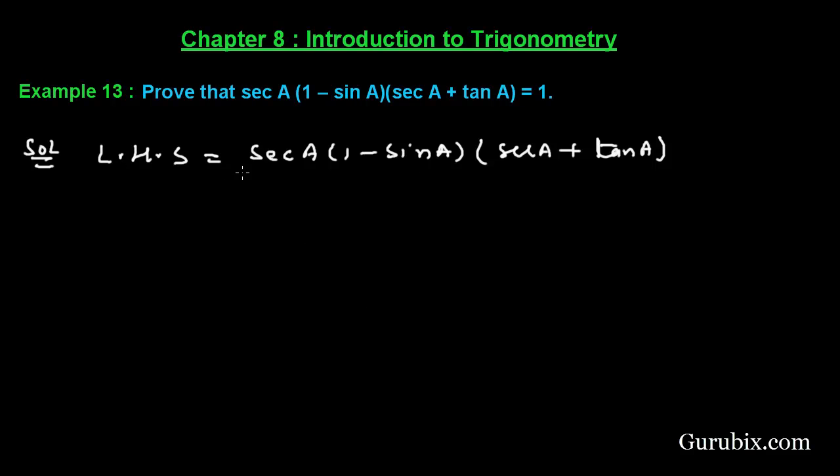So we can write sec A like this: 1/cos A. Here we have 1 - sin A so we need not to change it. Here we have sec A, this means it can be written as 1/cos A. Here we have tan A and we know that tan A equals sin A/cos A.